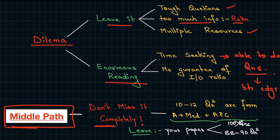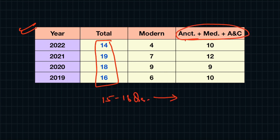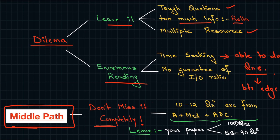If you look at the last 4 years of the UPSC Prelims, history in total has approximately 15 to 16 questions. On average, 11 to 12 questions are asked from ancient, medieval, and art and culture combined. In art and culture, if you have ancient and medieval knowledge, you can answer those questions as well.